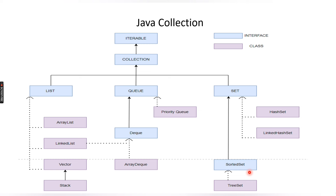Now we are going to learn about the Map interface. Here you can see in this collection framework we don't have a Map interface, because the Map interface does not extend the Collection interface. It does not extend it because it does not just store values like List and Set. In List and Set we store elements, but in Map we need to store values in key-value pairs, so its implementation is somewhat different from the other interfaces that extend the Collection interface.